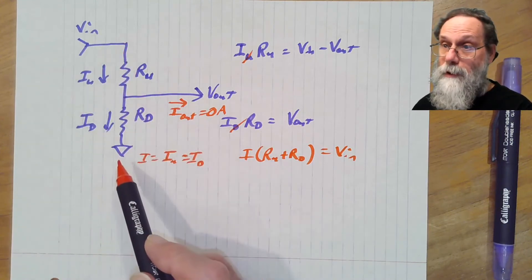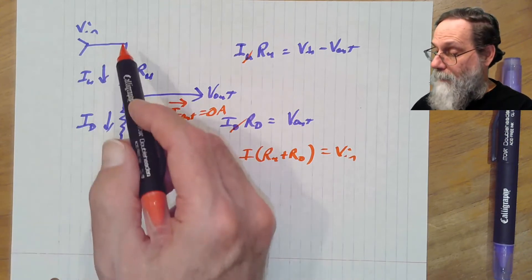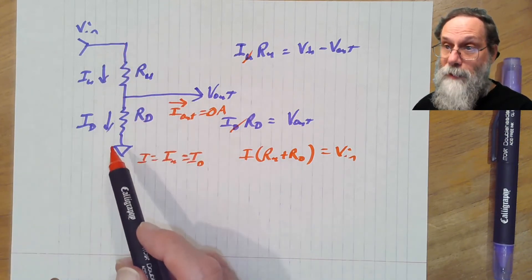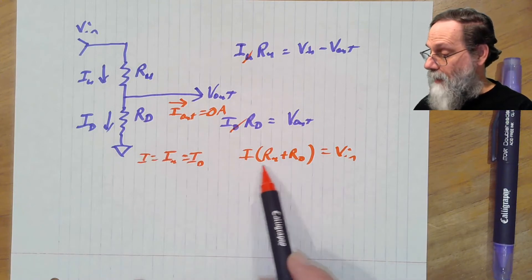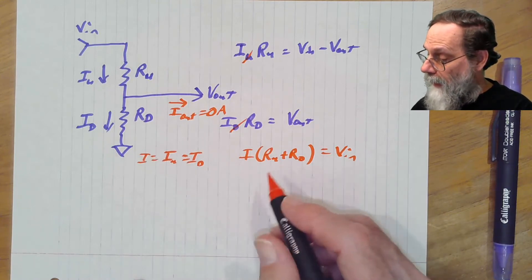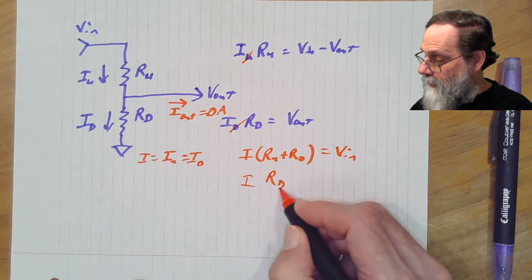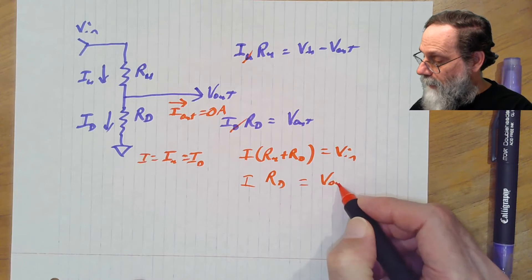So that's saying something we already knew, that if you've got two resistors in series, the current through them is what you would get from the sum of the two resistors. I times Ru plus Rd gives you the input voltage.